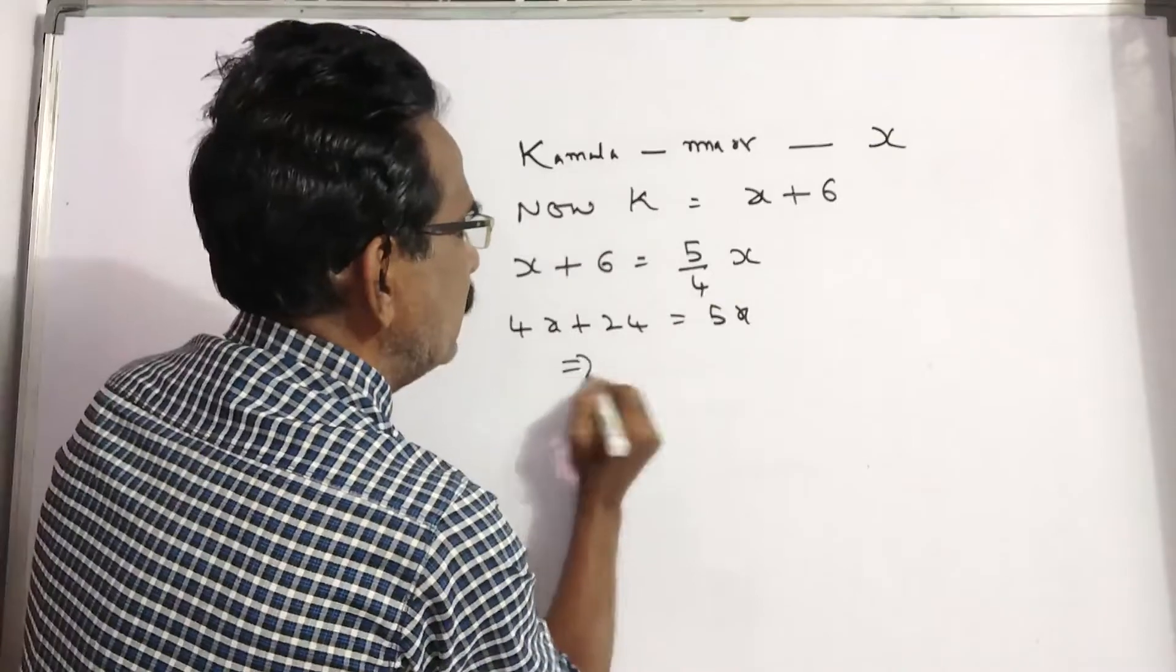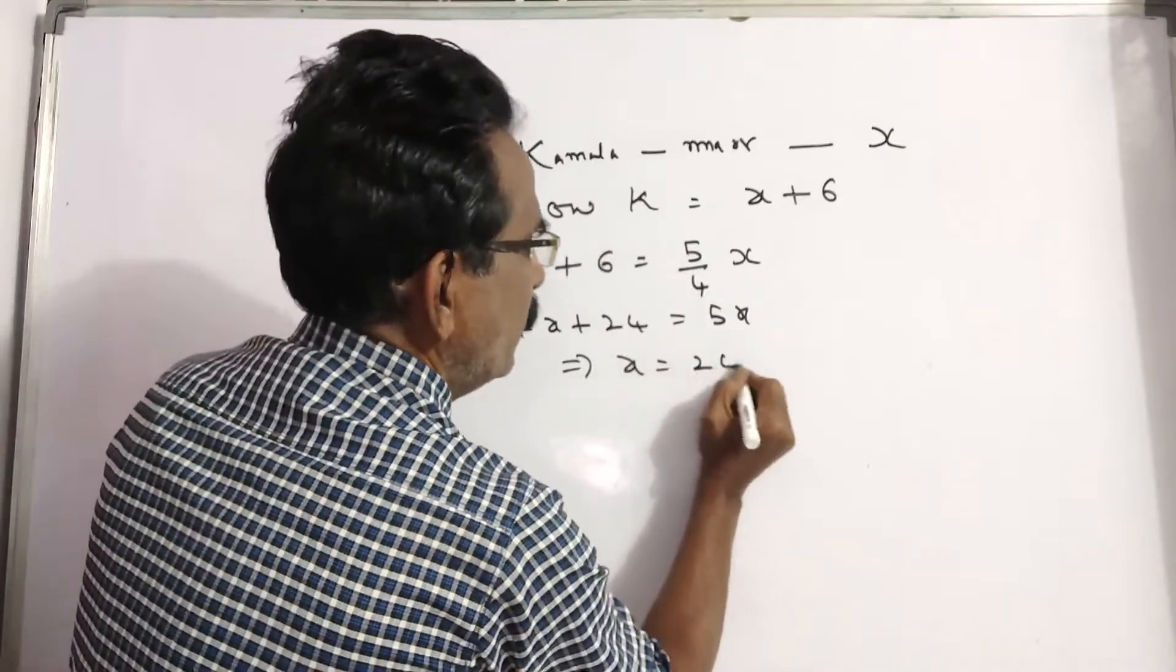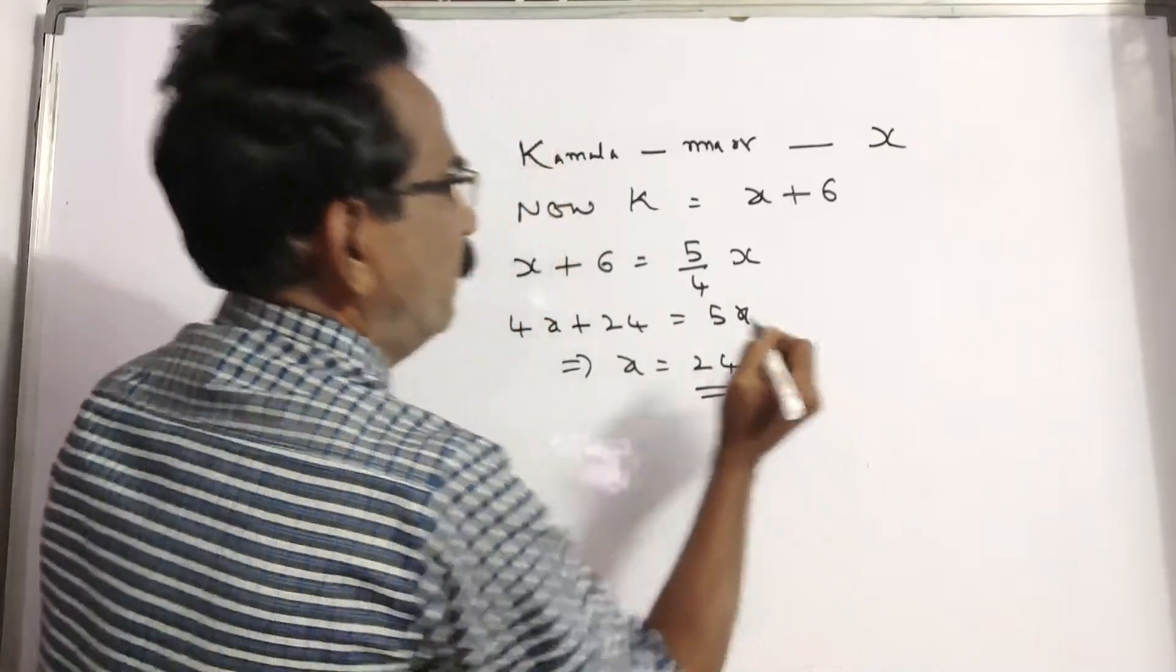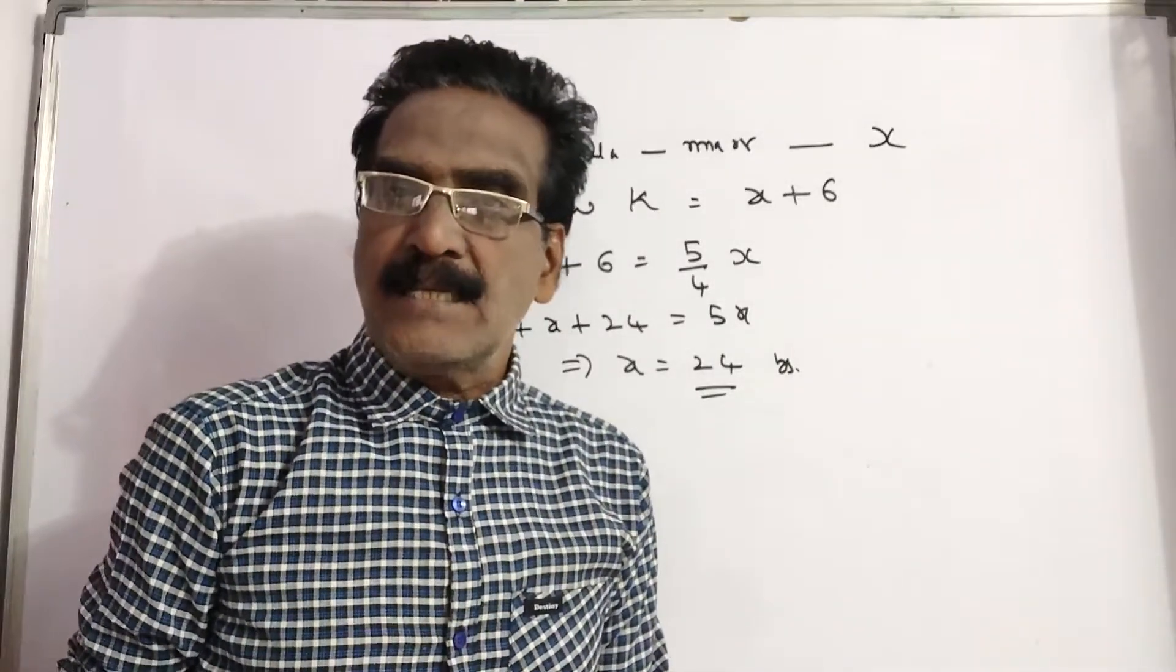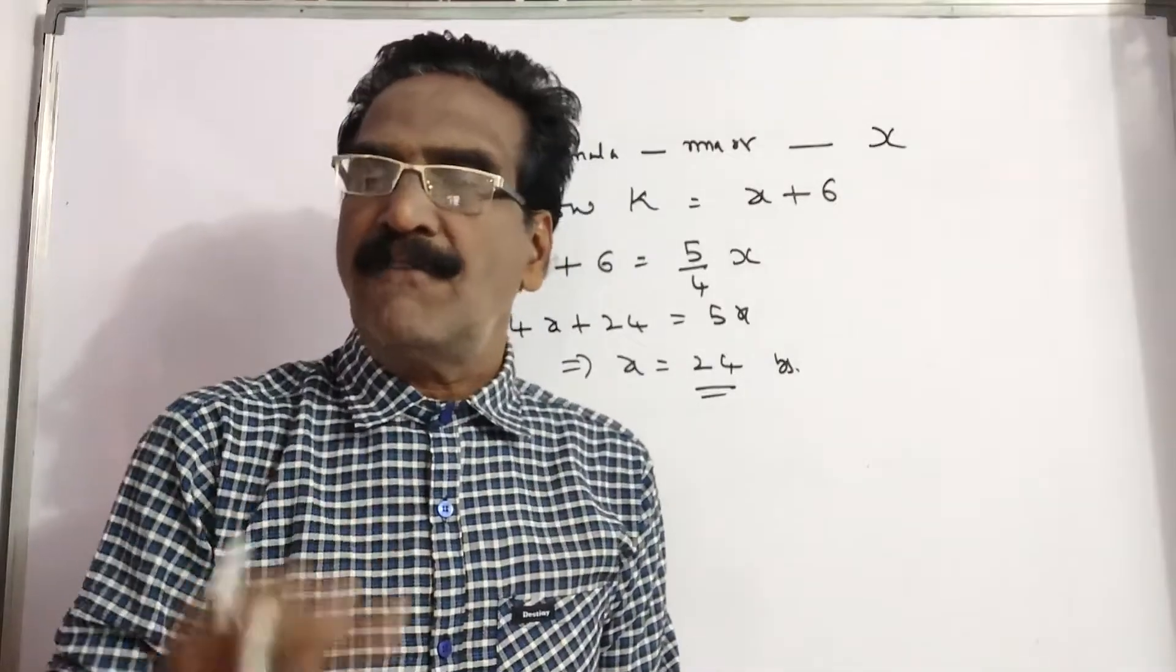It implies X is equal to 24 years. So her daughter's age is 1 by 10th of her age.